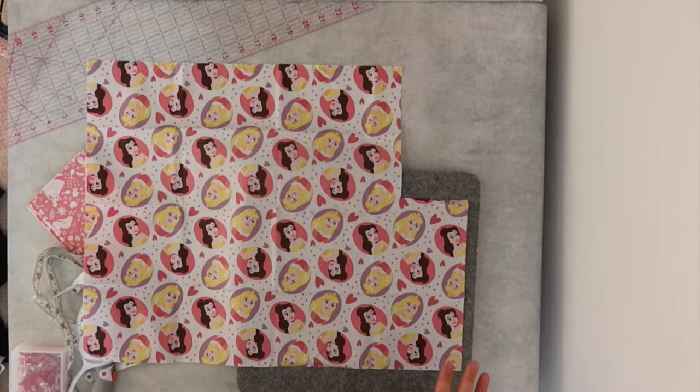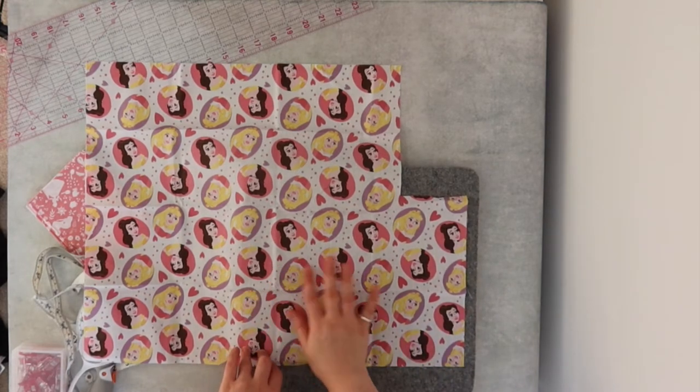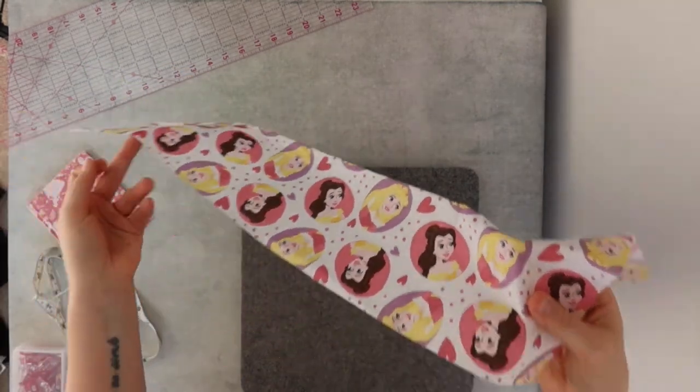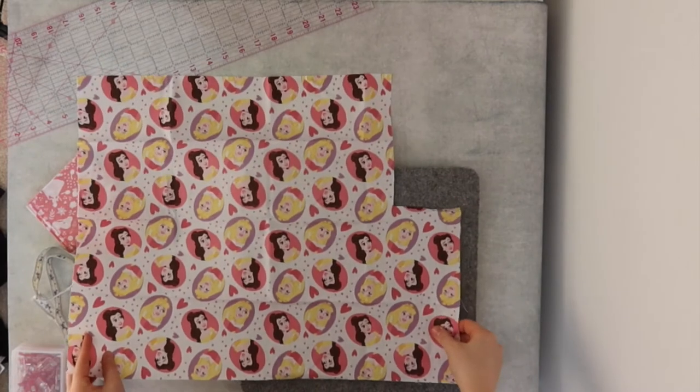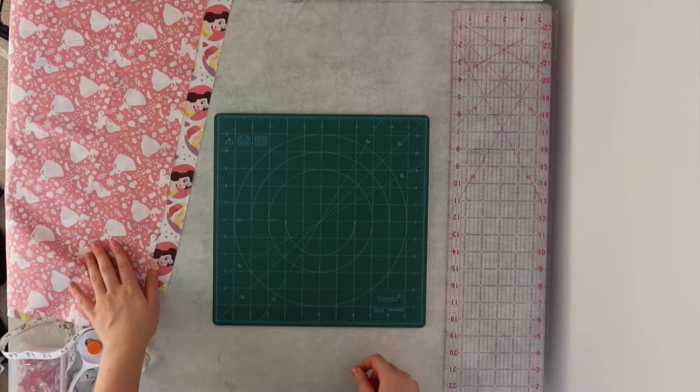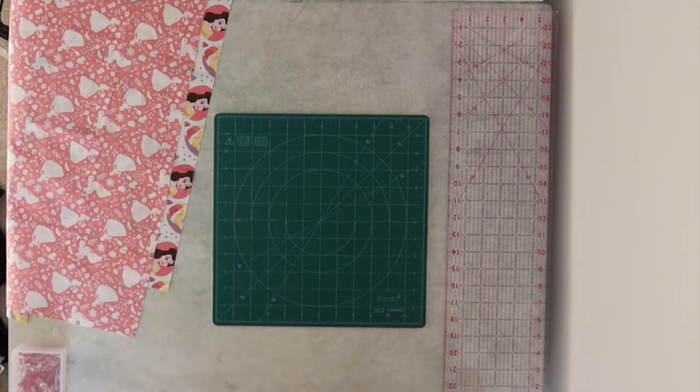Before we get started, you want to make sure that your fabric is nice and pressed. You don't want any folds or wrinkles or lines. As you can see, because mine's been folded, it's got lots of natural folds. You want to get rid of those so that you can make sure that your fabric is nice and flat. So now your fabric is nice and ironed, we're going to take it and cut it.